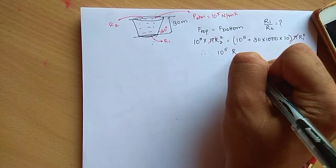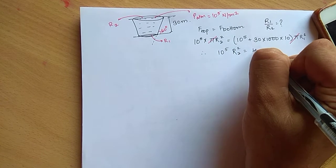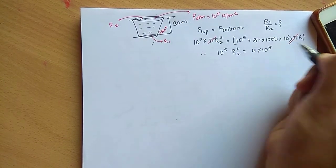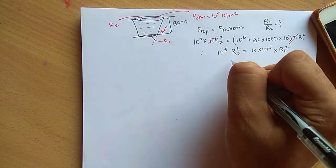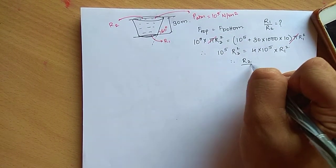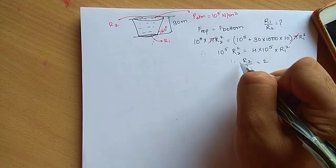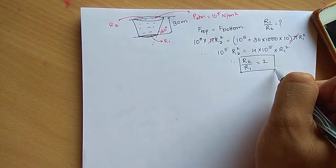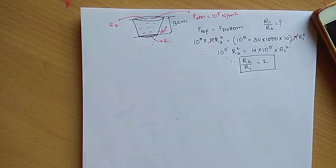So 10 raised to 5 into r2 square is equal to 4 into 10 raised to 5 into r1 square. Therefore r2 upon r1 you will get as 2. The answer will be equal to 2. So this 60 degree was not used.